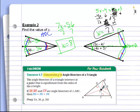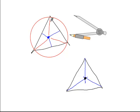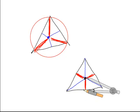The angle bisectors of a triangle intersect at point P, and that point is equidistant from the sides. Just like the perpendicular bisectors are equidistant from the vertices, the angle bisectors are equidistant from the sides of the triangle. And the perpendicular bisectors form the center of a circle — the angle bisectors form the center of a circle too.